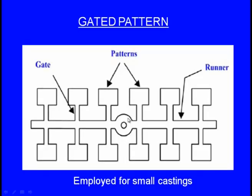Now let us see the gated pattern. The gated pattern is used for making very small castings. For example, if one has to make 12 small castings in a session, making a separate mold for each casting — with individual molding boxes, sprue pins, riser pins, and gating systems — consumes a lot of time. The question is: why not make several castings in a single mold? That is the concept of the gated pattern.